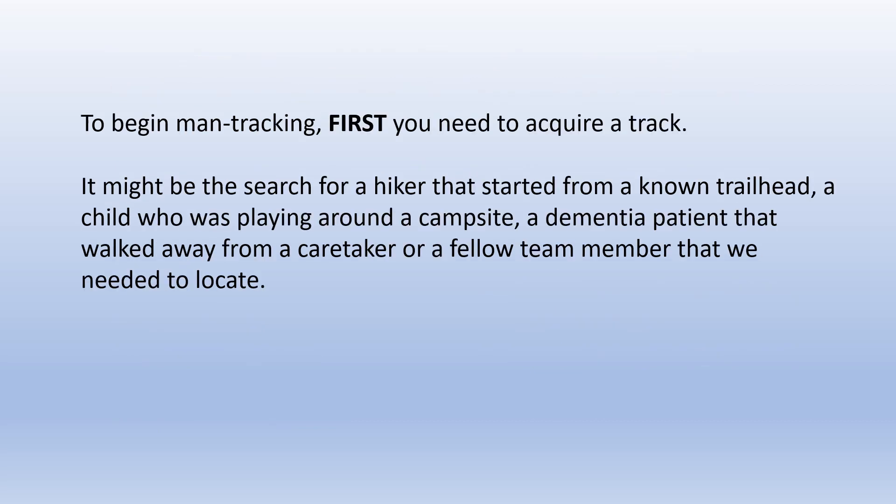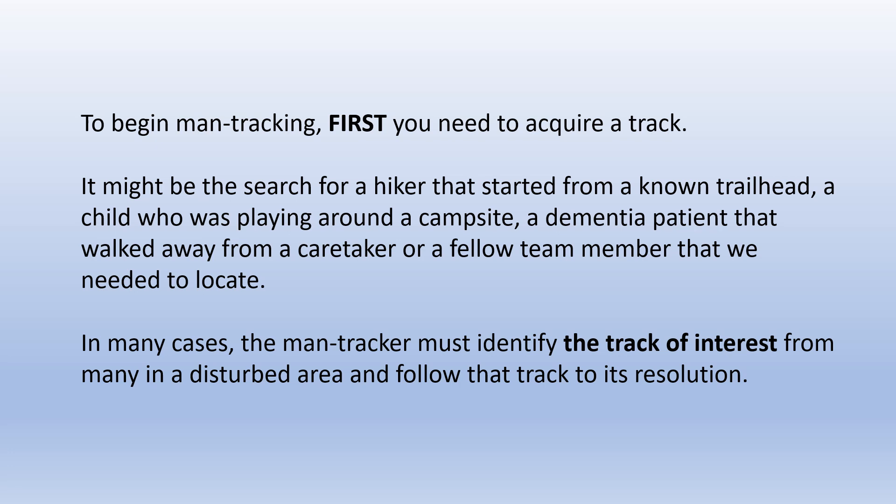To begin man tracking, first you need to acquire a track. It might be the search for a hiker that started from a known trailhead, a child who is playing around a campsite, a dementia patient that walked away from a caretaker, or a fellow team member that we just need to locate. In many cases the man tracker must identify the track of interest from many in a disturbed area and follow that track to its resolution.